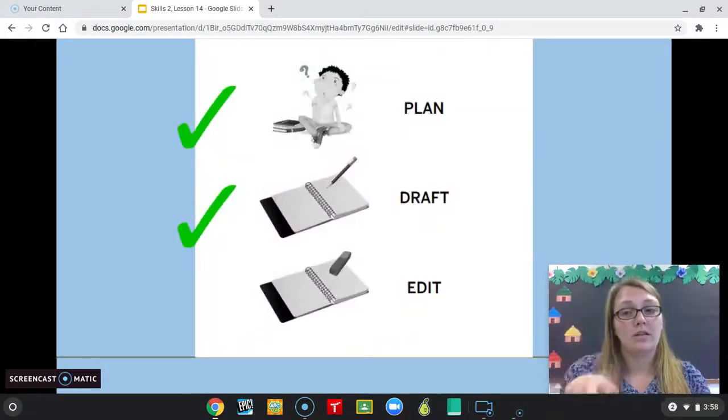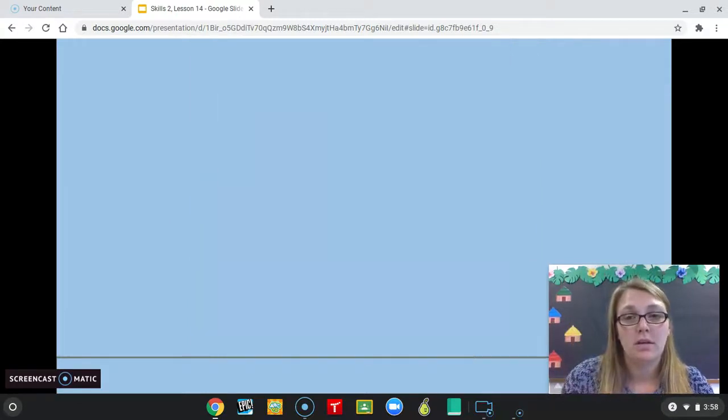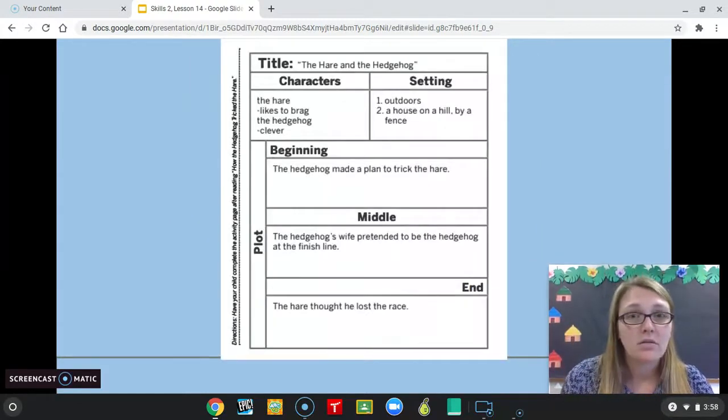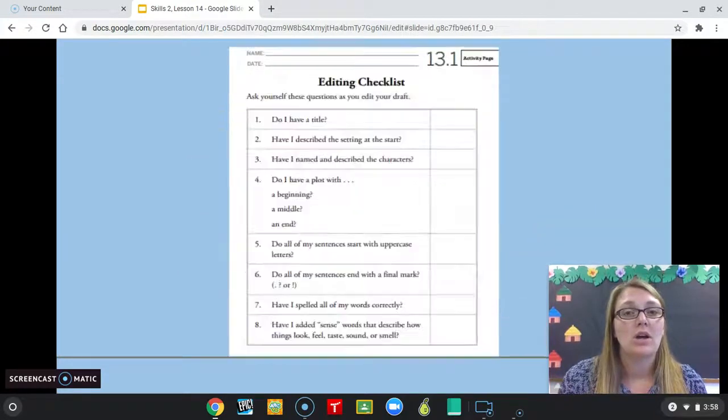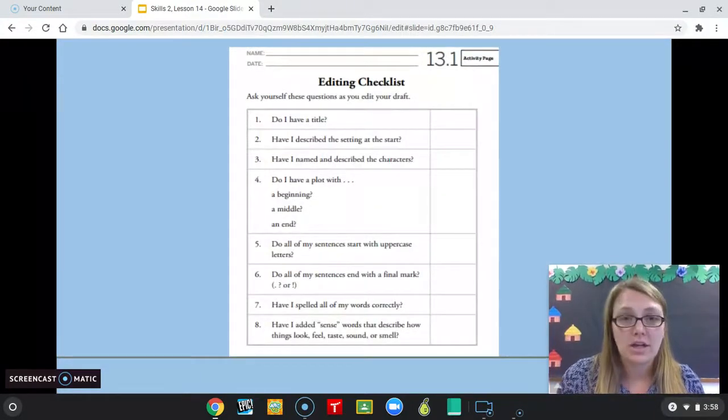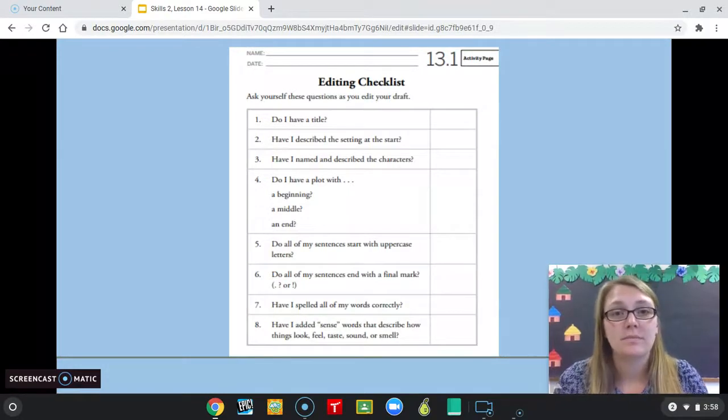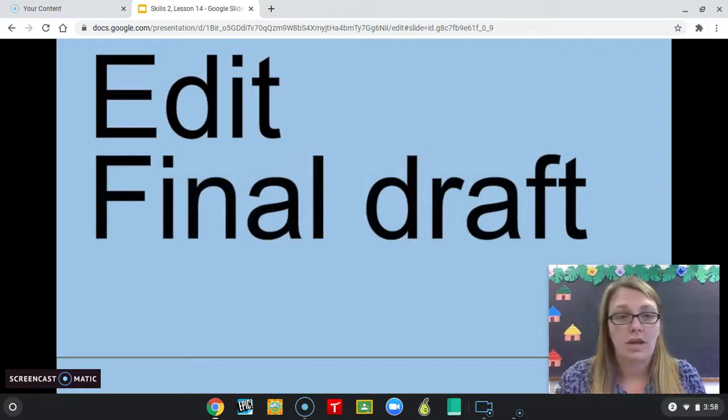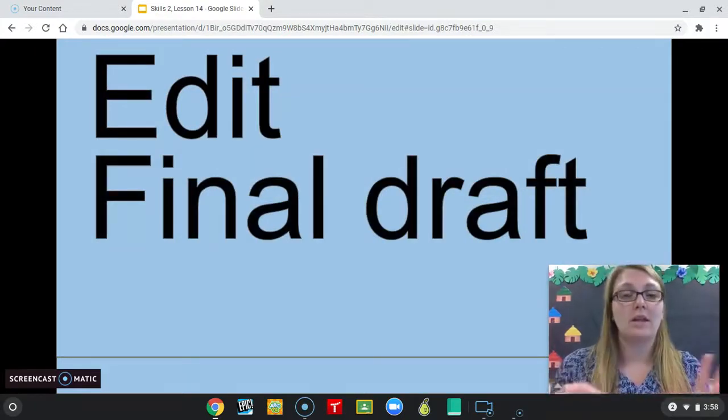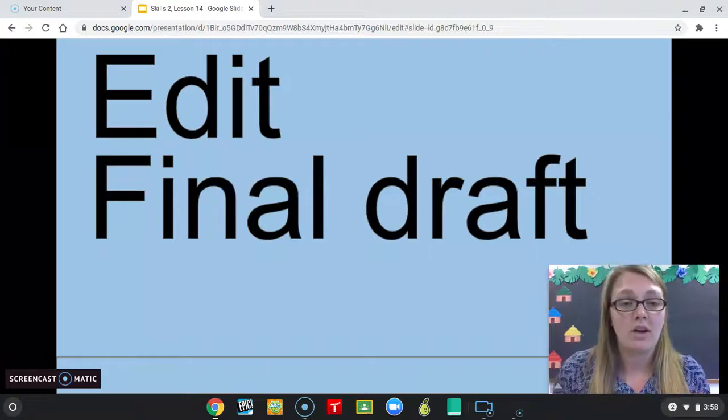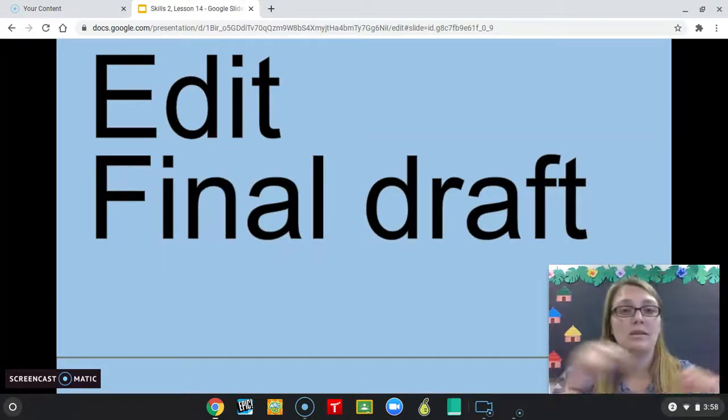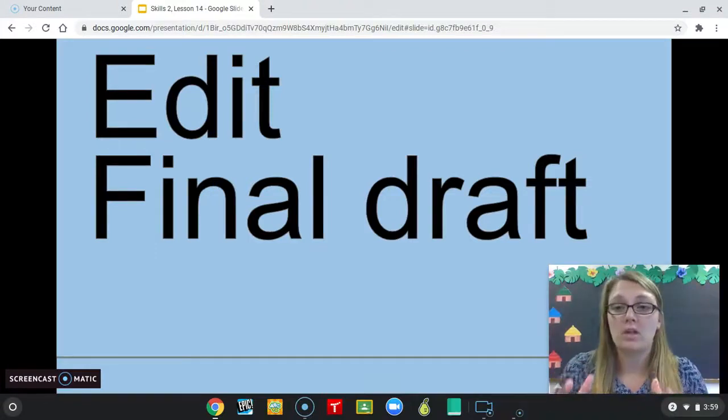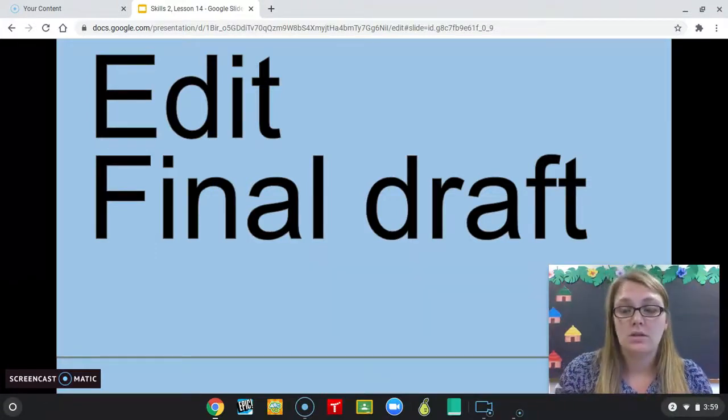All right. So we planned, we drafted, finishing our editing. Here is our planning page, our draft, our editing checklist. You're going to continue to edit your piece. Once you edit, you're going to then take all of your edits and rewrite it to make a final draft. So if you had to change spelling, you had to cross things out, move things around, whatever you had to do, you can take all of those changes and rewrite it into a final draft to submit.